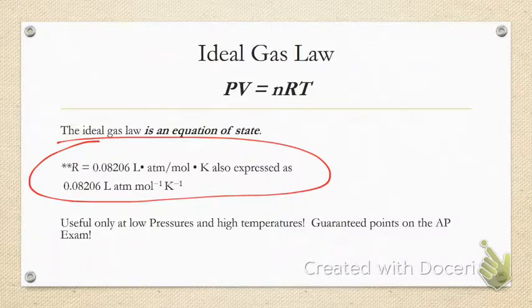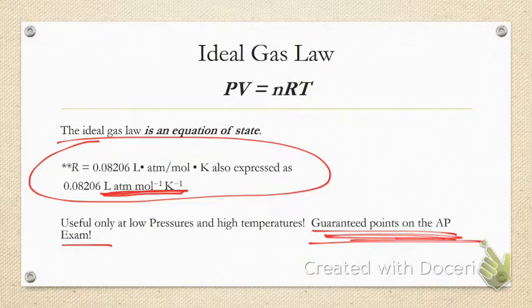This is the R-value I want you to use: 0.08206. If you use one of the other ones, you have to make sure you're in the right unit. It's easier to always use 0.08206 and know you need liters, atmospheres, and kelvin. Sometimes you'll see it written with negative ones—that just means those are on the bottom. You'll see that a lot throughout AP. These are only useful at low pressures and high temperatures, and they are guaranteed points on the AP exam.